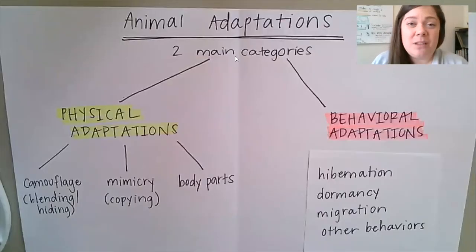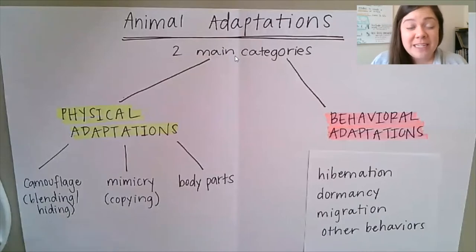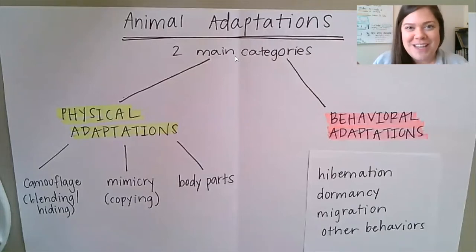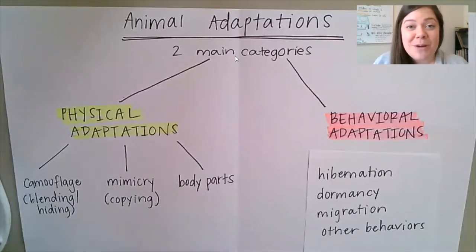All animals, even humans, have to have food, water, and shelter in order to survive. All animals also need to be able to protect themselves from harm. But how do they find those things and protect themselves? Well, that's all based on adaptations, which is what we learned about last week.